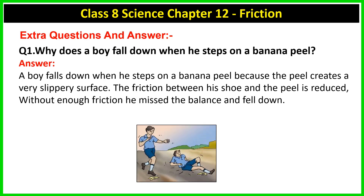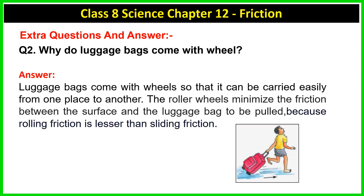Extra questions. Question 1: Why does a boy fall down when he steps on a banana peel? A boy falls down because the peel creates a very slippery surface. The friction between his shoe and the peel is reduced, so without enough friction he loses balance and falls down. Question 2: Why do luggage bags come with wheels? Luggage bags come with wheels so they can be carried easily. Roller wheels minimize friction between the surface and the bag because rolling friction is less than sliding friction.